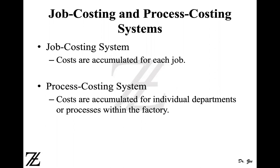However, in a process costing system, you accumulate costs to each department or process. The costs are accumulated not for the products but for each department and for each process within the factory, and then the costs are assigned to the cost object, which is the product.